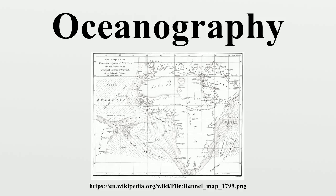He was also the first to understand the nature of the intermittent current near the Isles of Scilly. Sir James Clerk Ross took the first modern sounding in the deep sea in 1840, and Charles Darwin published a paper on reefs and the formation of atolls as a result of the second voyage of H.M.S. Beagle in 1831-36. Robert Fitzroy published a four-volume report of the Beagle's three voyages. In 1841-1842 Edward Forbes undertook dredging in the Aegean Sea that founded marine ecology.